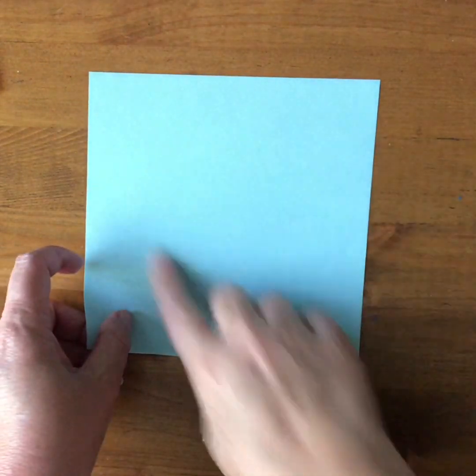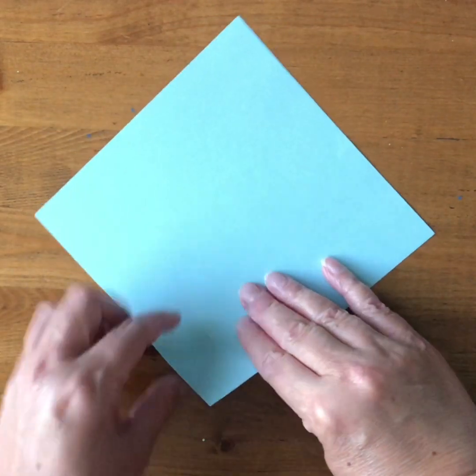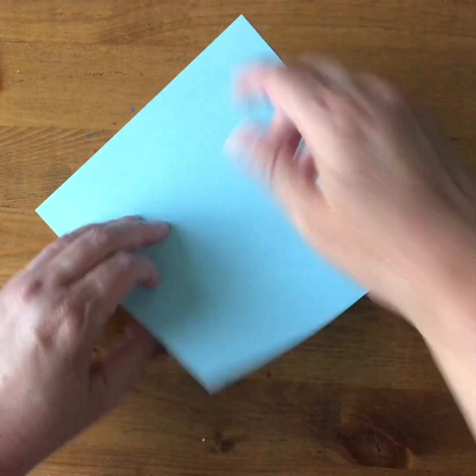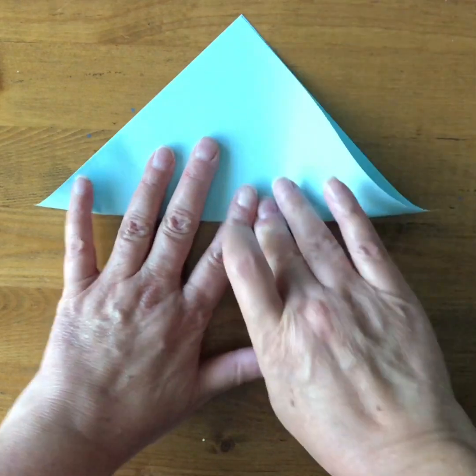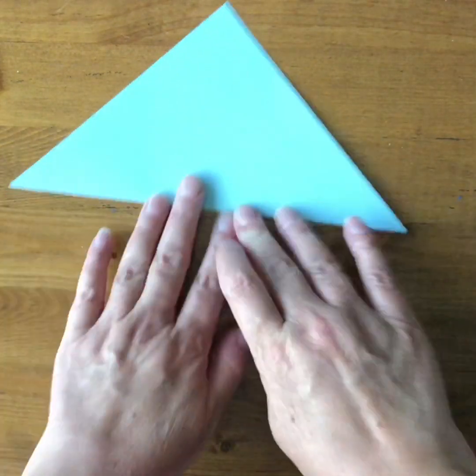So starting with a square, turn it a little bit and then go from bottom corner up to top corner and make your diagonal fold creating two triangles.